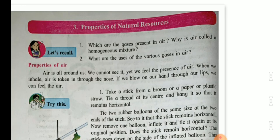Why is air called a homogenous mixture? Air is made up of oxygen, nitrogen, carbon dioxide, other gases, dust particles and water vapor. These are present in different proportions in the air hence air is called a homogenous mixture.